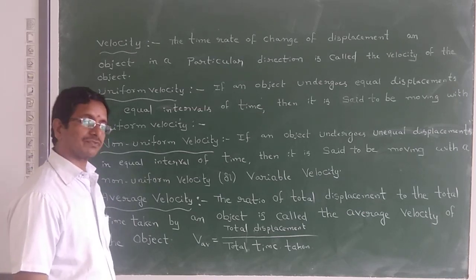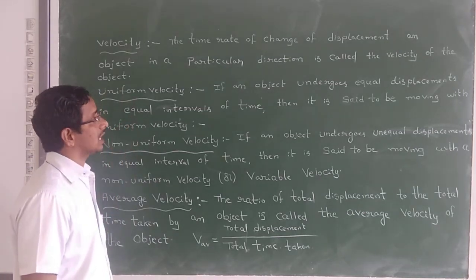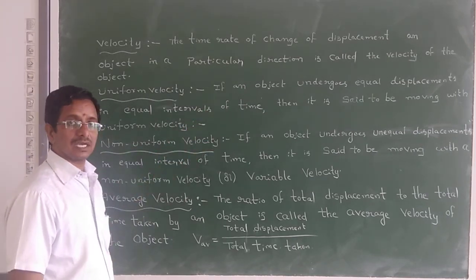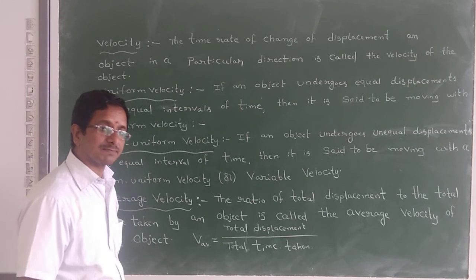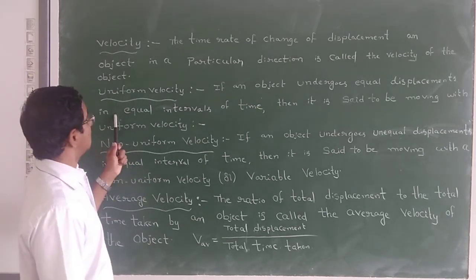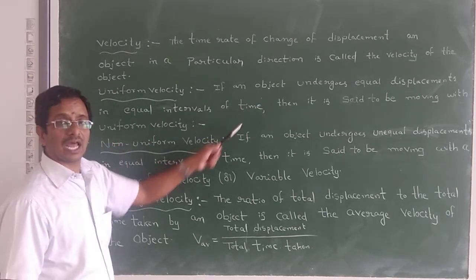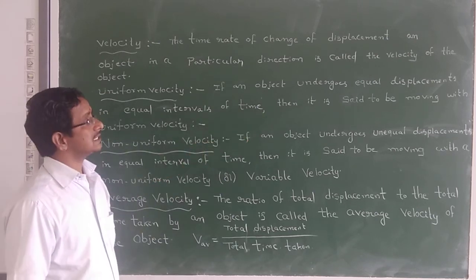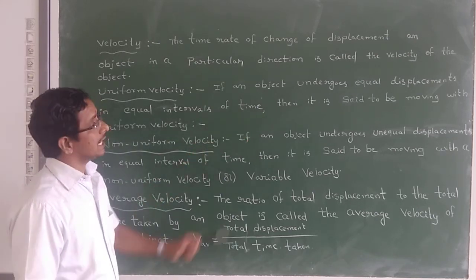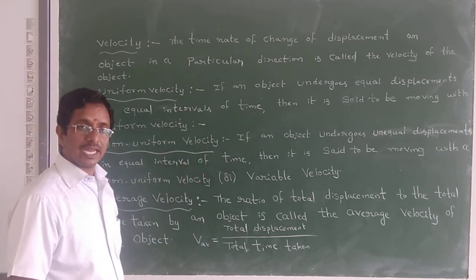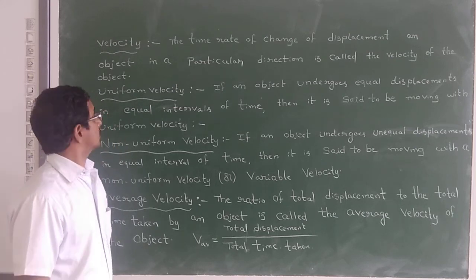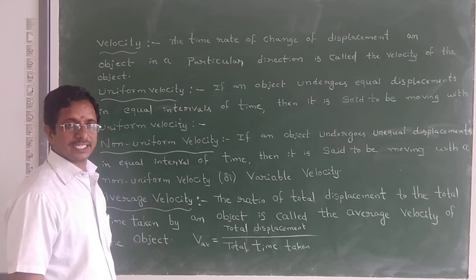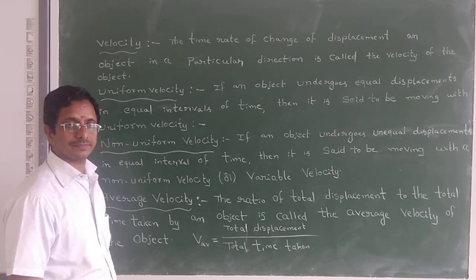Uniform Velocity: An object undergoes equal displacement in equal intervals of time. Then it is said to be moving with uniform velocity.